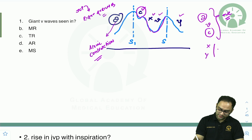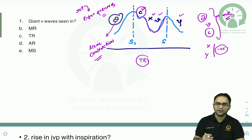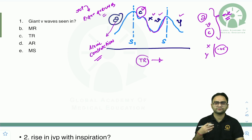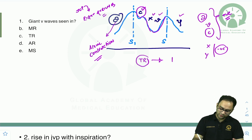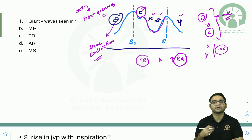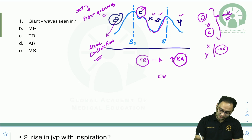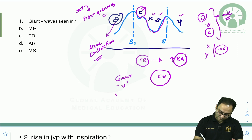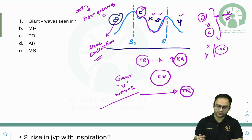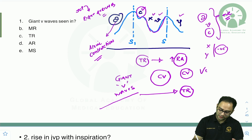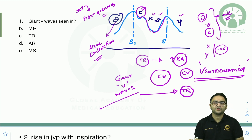In tricuspid regurgitation, blood goes from the right ventricle back into the right atrium, increasing right atrial pressure. What you get is a CV wave — the giant V waves seen in tricuspid regurgitation, also called CV waves. The waves are said to be 'ventricularized' in this condition.